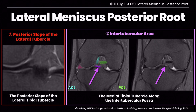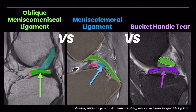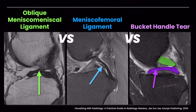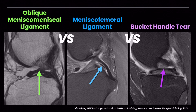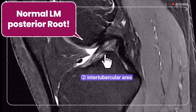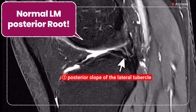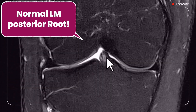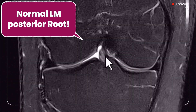Now, let's talk about common diagnostic pitfalls. The posterior root of the lateral meniscus can be mistaken for the oblique meniscomeniscal ligament, the meniscofemoral ligaments, or displaced meniscal fragments in bucket handle tears. We will explore each of these mimickers in more detail later. For now, remember this: always trace the structure back to its meniscal origin and bony insertion. And keep in mind that even if you see only one component, it does not necessarily indicate a tear — about 24% of individuals have a solitary attachment.